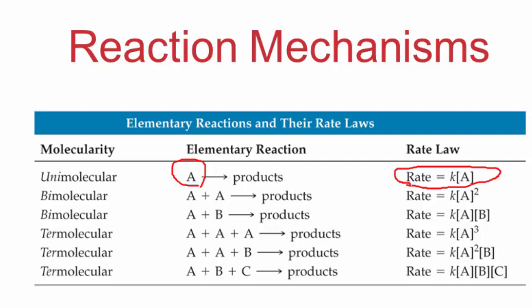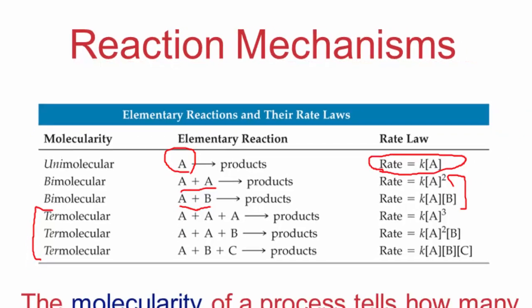Next we have bimolecular. Bimolecular can be two of the same reactants reacting or two different reactants reacting. Each of these, the overall order ends up as being two. And then we finally have termolecular reactions and these are extremely rare. Think of the likelihood of three different atoms colliding exactly at the same time with exactly the right position and the right energy. Termolecular reactions are extremely rare and we hardly ever see those.